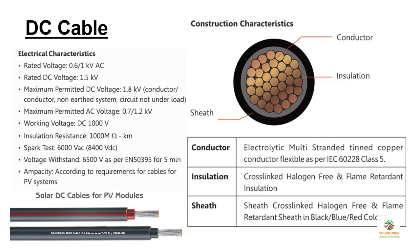Cables are color coded. Red refers to positive or live, while black refers to negative or neutral. The earthing cable is coded with green color. In a three-phase system, the RYB phases are coded with red, yellow, and blue colors respectively.